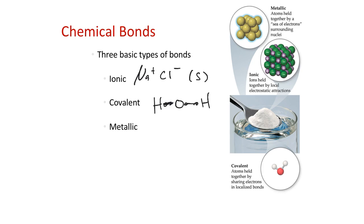Once you get through the chapter, you get a gauge of how strong covalent bonds are. We saw in chapter 5 that breaking this bond is about 400 to 500 kJ per mole. Breaking a mole of an ionic bond is about 800 kJ per mole, so ionic bonds generally are a little bit stronger than covalent bonds.